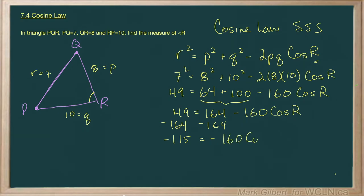Now, remember before when I was talking about the cosine law, I said that all of that, let's do it in red, is multiplied. So if we need cosine R by itself, we're going to divide both sides of this by negative 160. And I get the cosine of R equal to 0.71875.